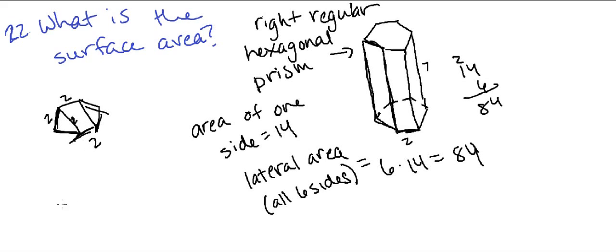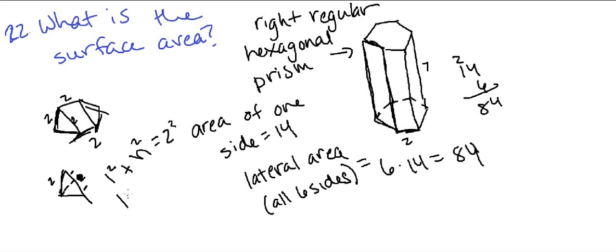I'm going to redraw the triangles. The base is 2, and the area of a triangle is one half the base times the height. If we split the base, each half is 1, for a total of 2. We find the height using the Pythagorean theorem: 1² + h² = 2², so 1 + h² = 4, h² = 3, and h = √3.